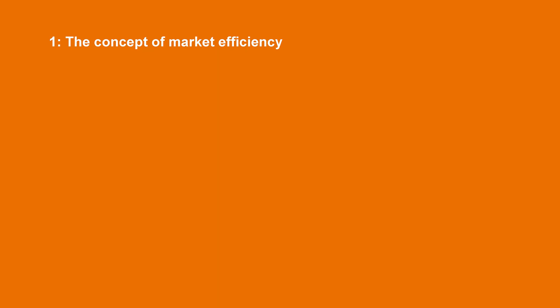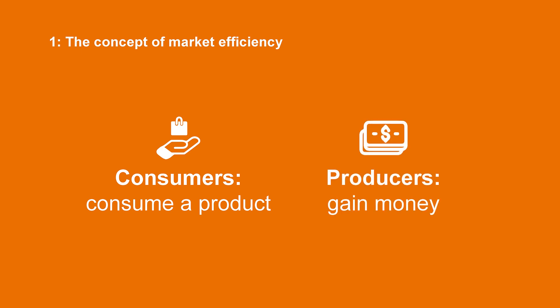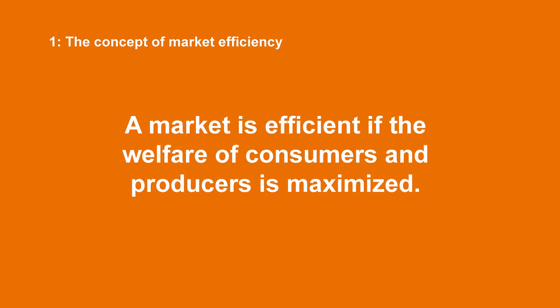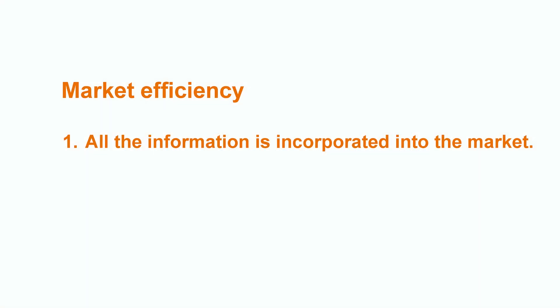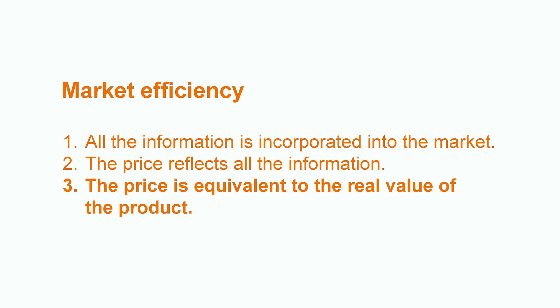Consumers and producers gain a welfare out of a transaction. In general, consumers get to consume a product. Producers get to gain money. A market is efficient if the welfare of consumers and producers is maximized. The notion of market efficiency means that all the information in an efficient market is incorporated into the market. In this case, the price of a product reflects all the information, and the price is strictly equivalent to the real value of the product.